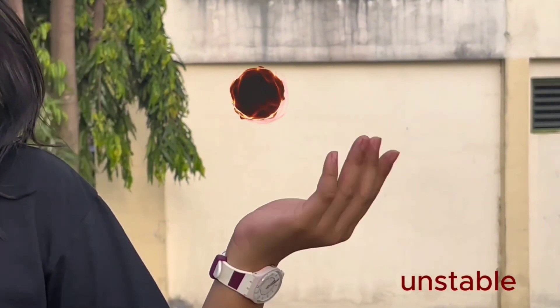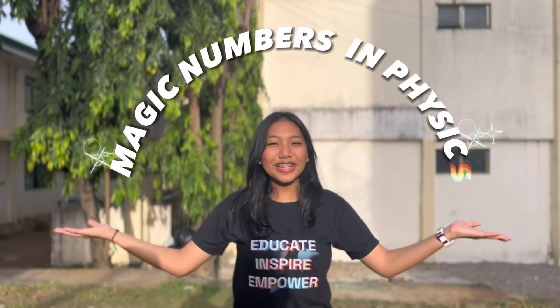This is a stable atom. Imagine a world where atoms have their own version of magic, numbers that make them exceptionally stable. Let's delve into the fascinating realm of nuclear physics to uncover the secrets behind the magic numbers in physics.